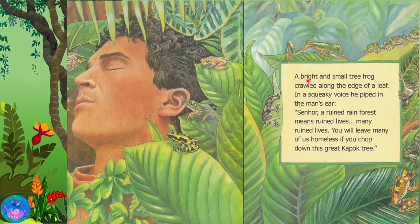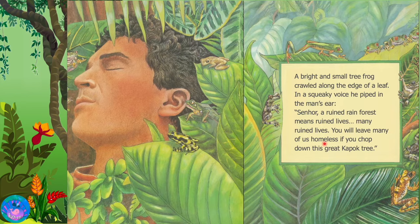A bright and small tree frog crawled along the edge of a leaf. In a squeaky voice he piped in the man's ear: Senor, a ruined rainforest means ruined lives. Many ruined lives. You will leave many of us homeless if you chop down this great kapok tree.